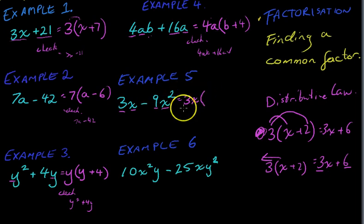Now, this is a bit weird. Ask yourself the question, 3x times what makes 3x? Some of you might be going, whoa, what's happening? 3x times what makes 3x? 3x times 1 makes 3x. And then you need to ask yourself, 3x times what makes negative 9x squared? 3x times negative, because it's making a negative here. Negative 3, because 3 times 3 makes 9. And then we need an x squared. So, 3x times negative 3x.